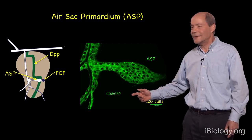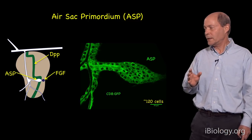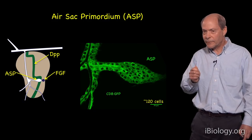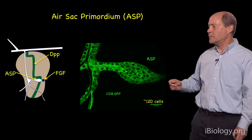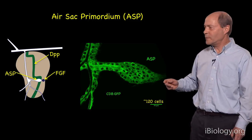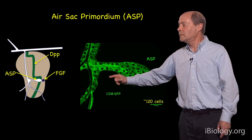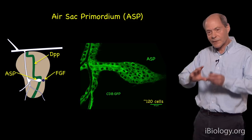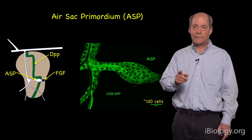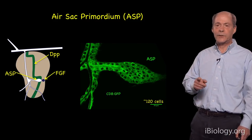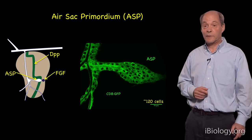We've expressed CD8GFP — a form of GFP fused to a transmembrane domain of the mouse protein CD8, so that GFP is tethered to the membrane of the cell that makes it. This beautiful image of the air sac primordium shows the cells, the black areas of the nuclei, the lumen, a stalk and a bulbous end. We can count about 120 cells at this stage of development.